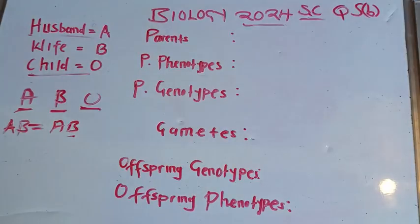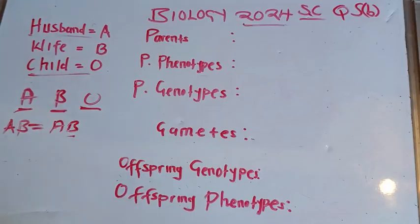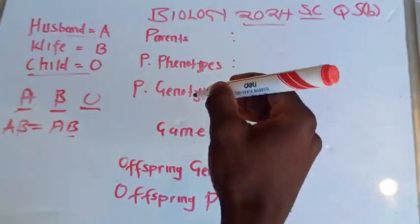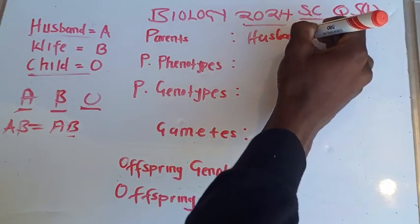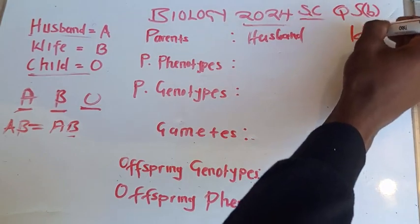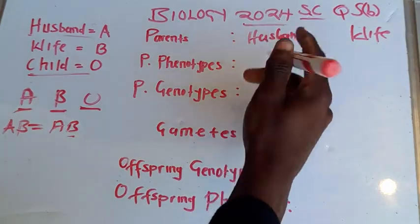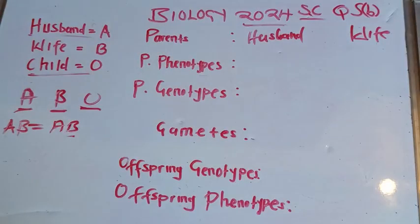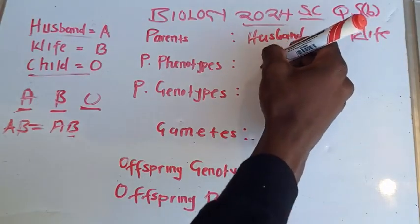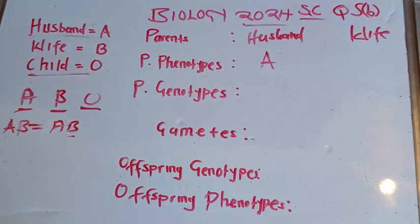In this case, the husband has blood group A and the wife has blood group B, and we need to show how these two parents can produce a child with blood group O. The first step is to write the parents — the husband and the wife — and then show their phenotypes: blood group A for the husband and blood group B for the wife.